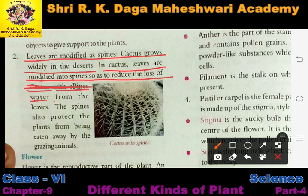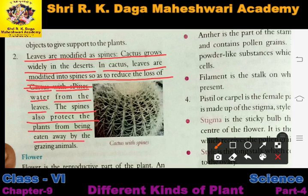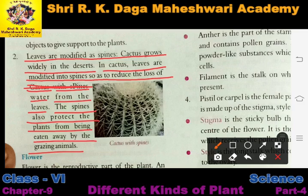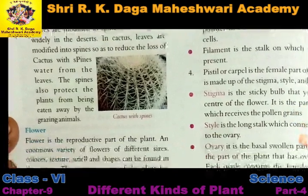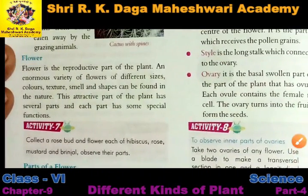We know that in deserts there is already a scarcity of water, so to prevent water loss the leaves modify themselves into spines. The spines also protect the plant from being eaten away by grazing animals. So these spines protect the plant from animals and also prevent the loss of water. In this way, leaves can modify themselves and help in the growth of the plant.